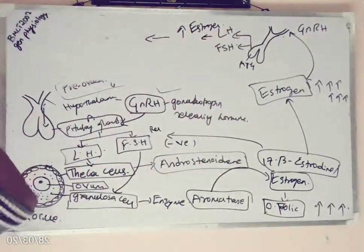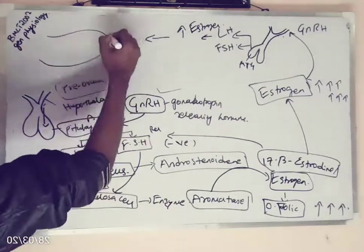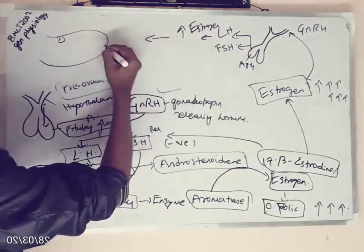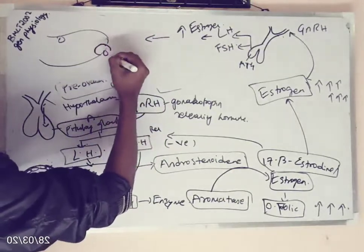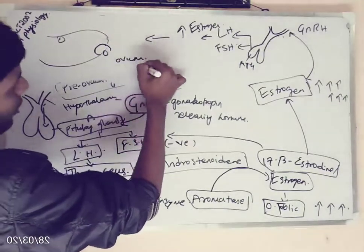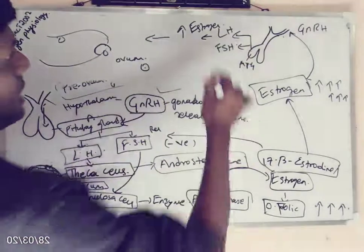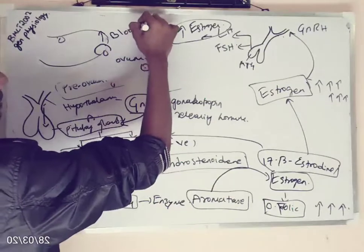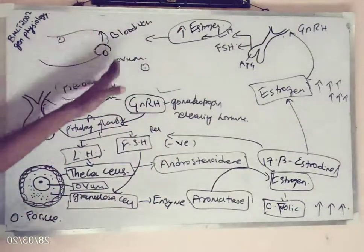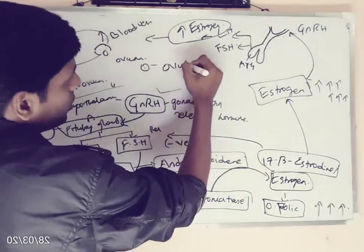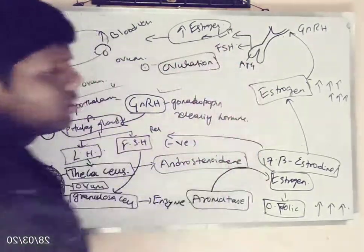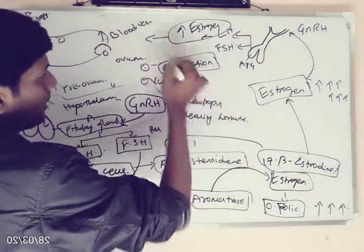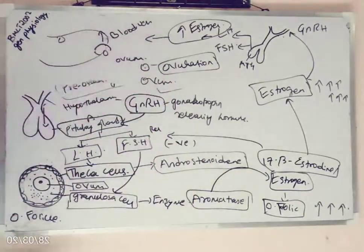With this increased estrogen, what happens to the ovary? The follicle will start growing enormously and become so big that it will release the ovum. In the presence of increased estrogen, blood vessels to the ovary will increase, and these blood vessels will release the ovum by a process called ovulation. This is how estrogen acts on the ovary to release the ovum.